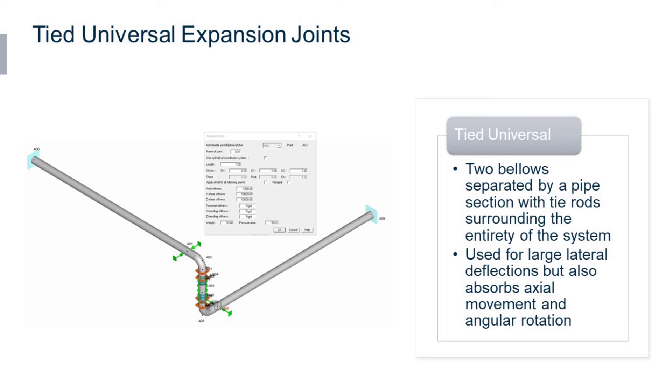They're usually furnished with tie rods which have the function to distribute the movement between the two bellows and to absorb pressure thrust.